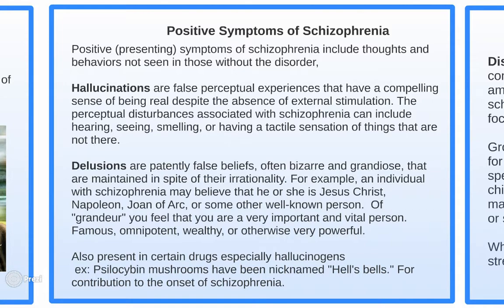A friend who developed drug-abuse-related schizophrenia would see people in places they shouldn't be — he was unsure if someone was really there or not most of the time. He learned that if he sees someone in a place they're not supposed to be, they're probably not real. On the other hand, there are also delusions — false beliefs, often bizarre and grandiose, maintained despite their irrationality.